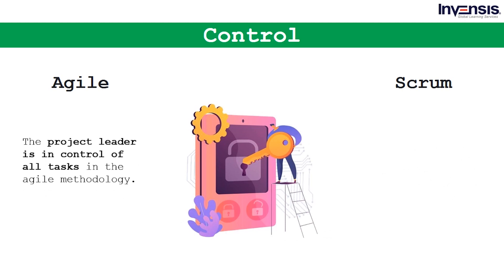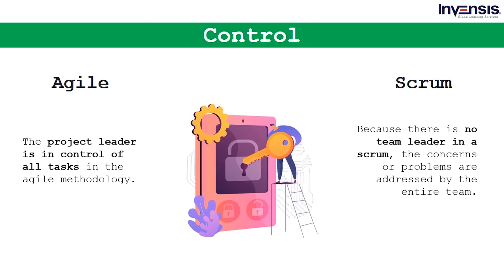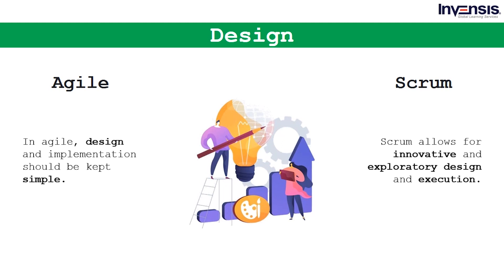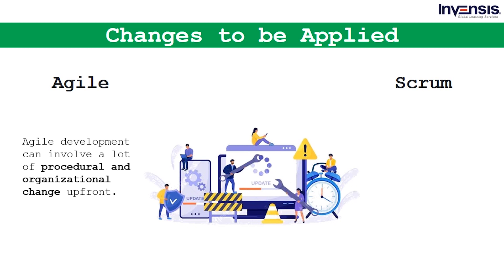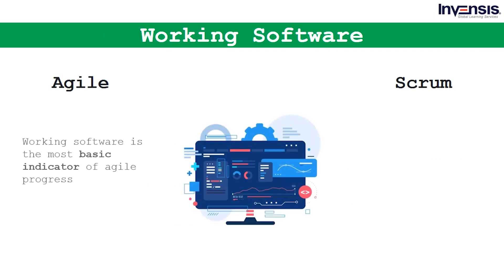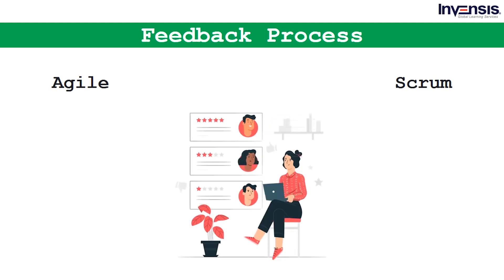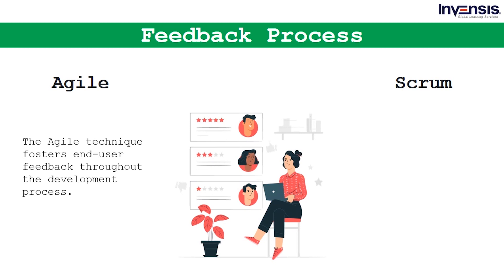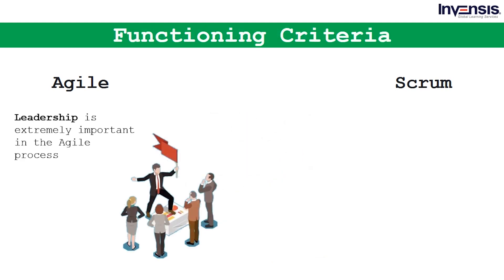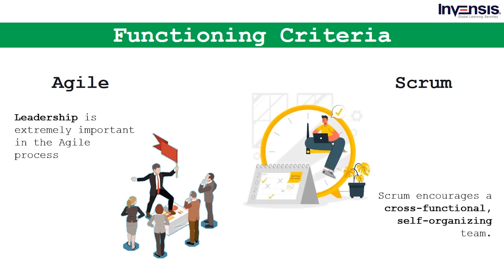In the Agile methodology, the project leader is in control of all tasks. Because there is no team leader in Scrum, concerns or problems are addressed by the entire team. In Agile, design and implementation should be kept simple, whereas Scrum allows for innovative and exploratory design and execution. Agile development can involve a lot of procedural and organizational change up front, while there aren't many changes needed when applying the Scrum process. Working software is the most basic indicator of Agile progress, but it is not a basic Scrum criterion.